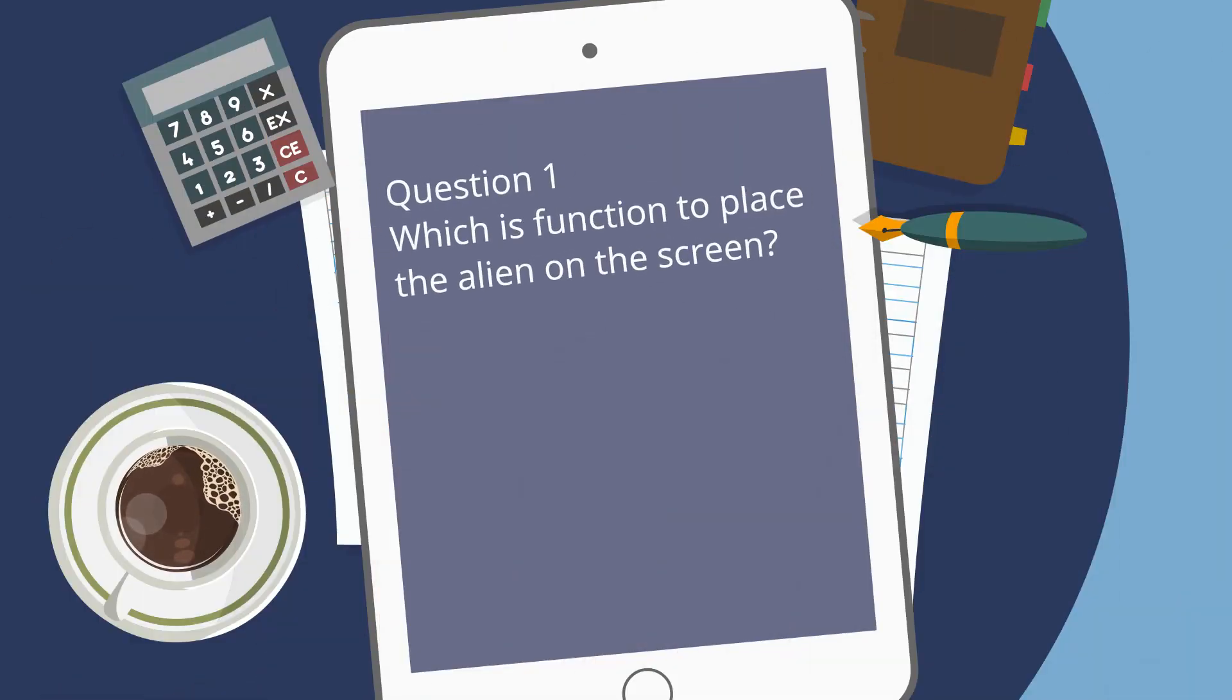Question 1. Which is function to place the alien on the screen? A. Alien.draw B. Place.Alien C. Print quote Alien. The answer is B. We can use the function to place the alien on the screen. Exactly!